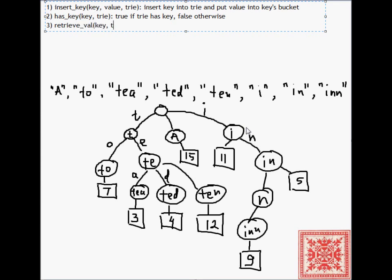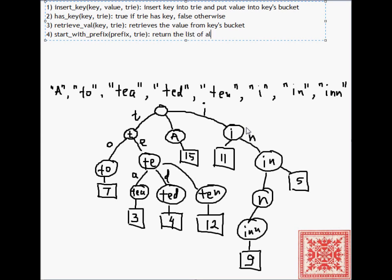Then retrieve_val takes a key and Trie and retrieves the bucket's value, the value from the key's bucket. And finally, start_with_prefix. That's one of the typical uses of Tries in text processing. We are given a prefix and a Trie and we want to find all the strings, all the keys in the Trie that start with the given prefix. And prefix is just a sequence of characters, a non-empty sequence of characters, has at least one character.